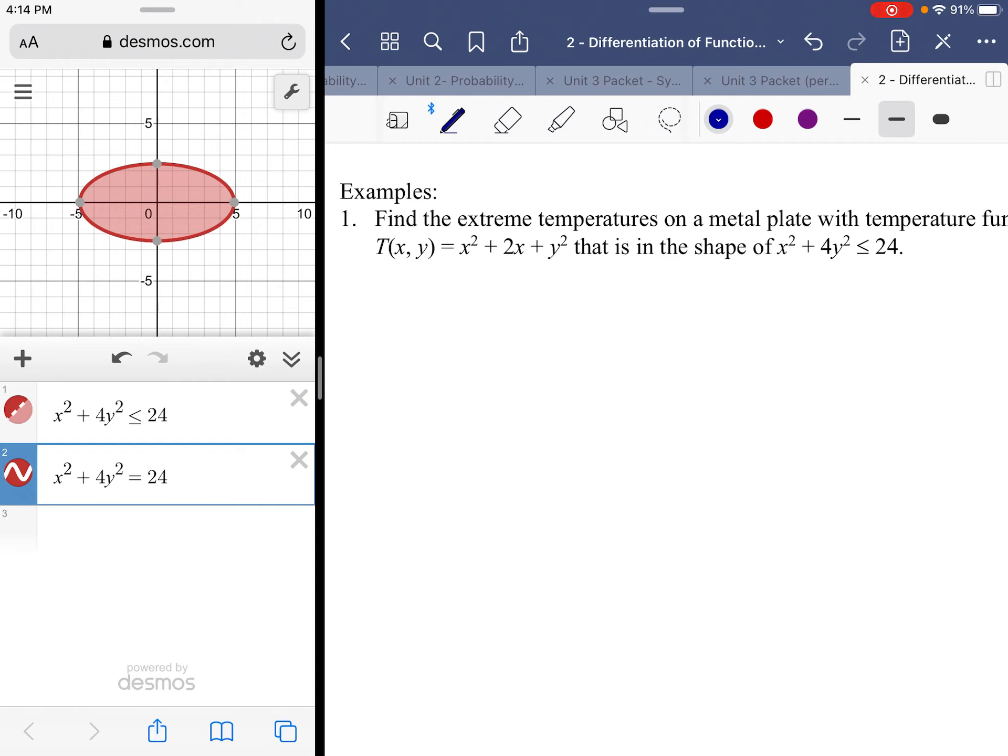We need our function, our multivariable function, and from there we can determine our partials T_x and T_y. So T_x = 2x + 2, and y squared... it would be if I didn't do it wrong. T_y = 2y.